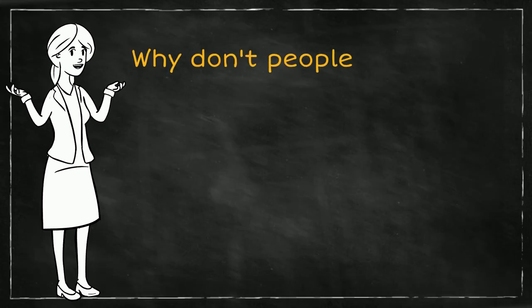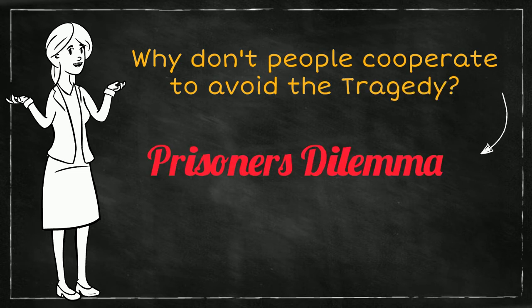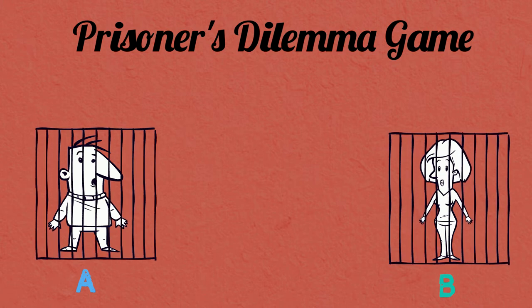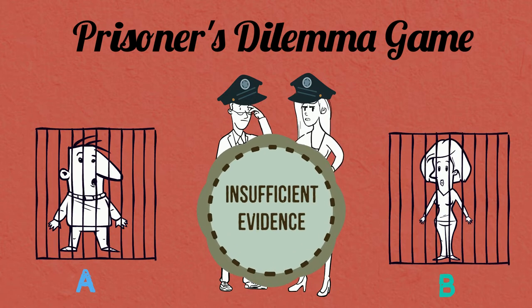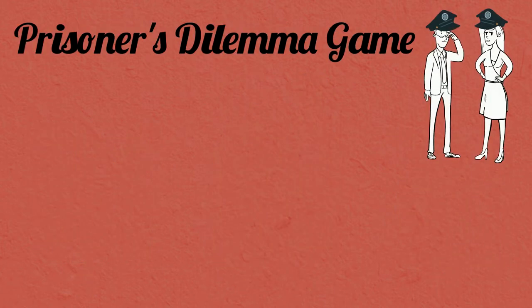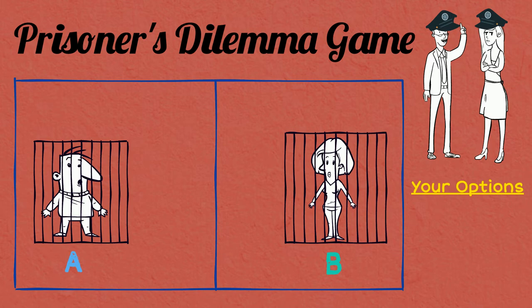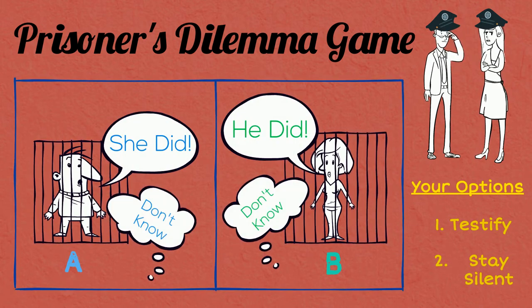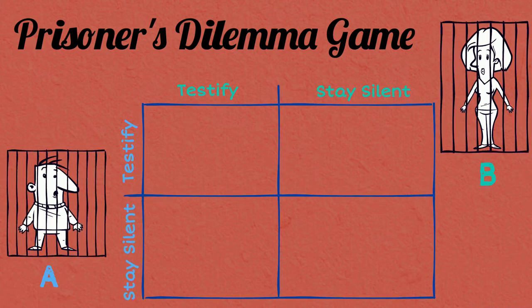But why do people not cooperate to avoid the tragedy? This can be understood using the prisoner's dilemma model from game theory. In the prisoner's dilemma game, there are two prisoners — let's say A and B — who have been arrested for some crime they committed, but the police do not have enough evidence against them to charge them. So the police decides to try to make them turn against each other. They keep each prisoner in a separate room and give them two options: they can either testify against their partner or stay silent. So, taken together, their options are: